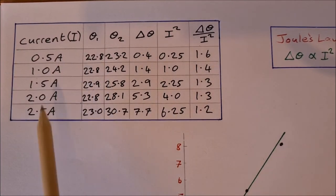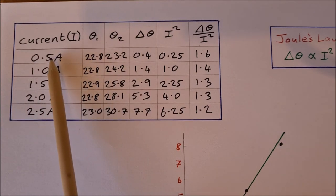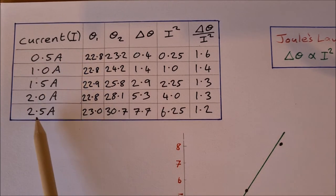Here is our table of data. So the current here goes from 0.5 amps up to 2.5 amps. This column shows our initial temperature. This column shows our final temperature.